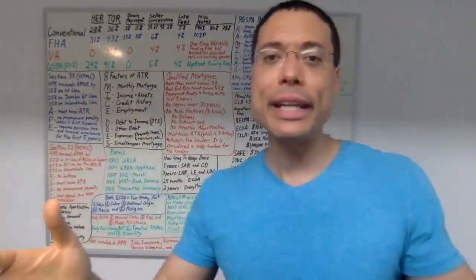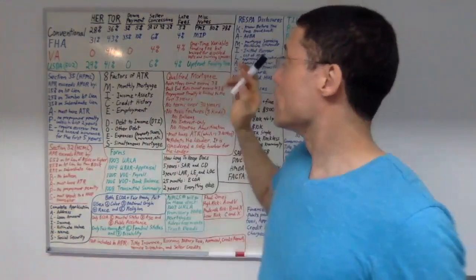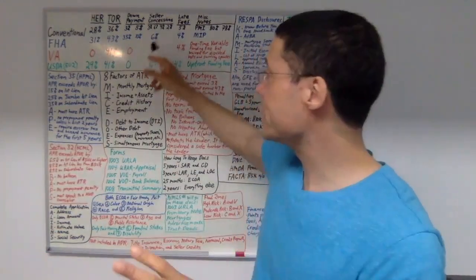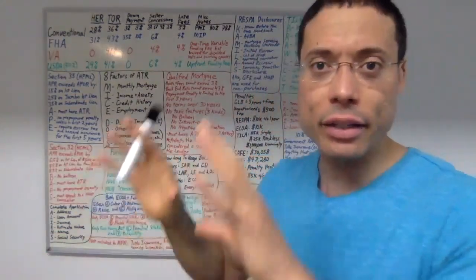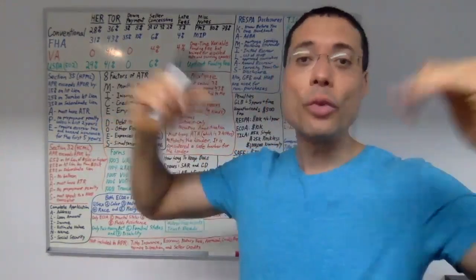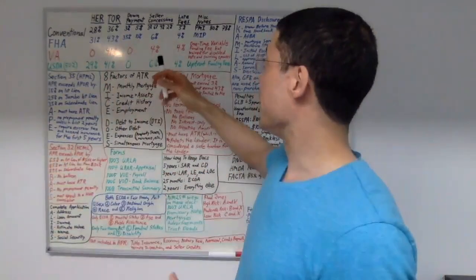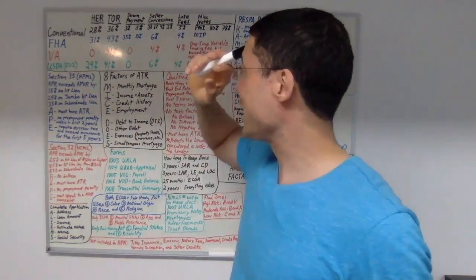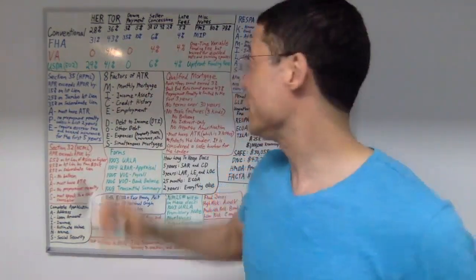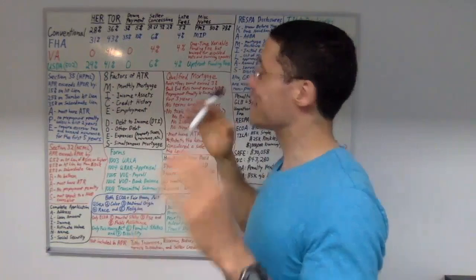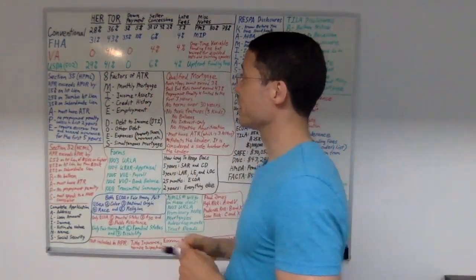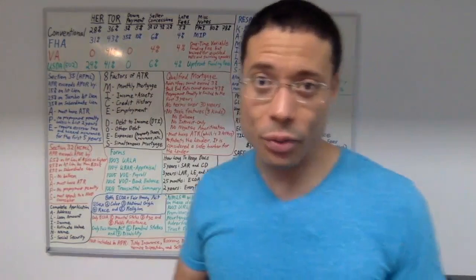By the way, all these percentages we were talking about are for owner-occupied properties. But if the property is an investment property, then the maximum seller concession is 2% for a conventional loan.